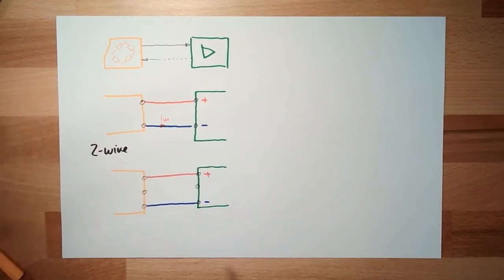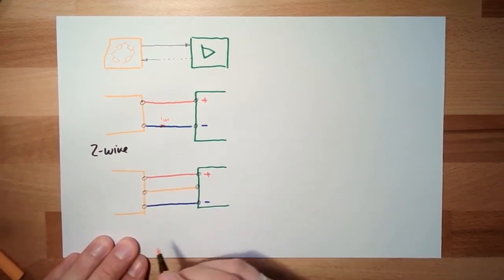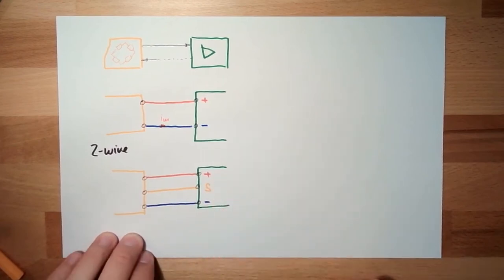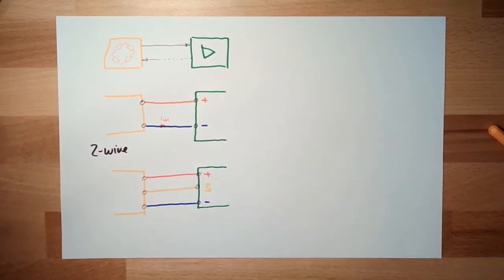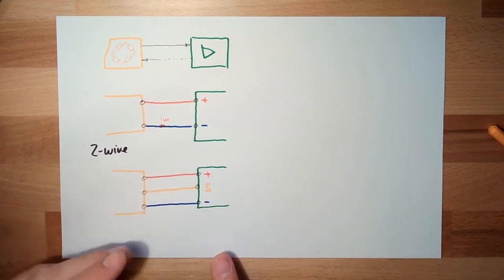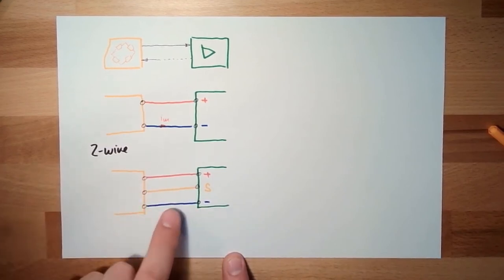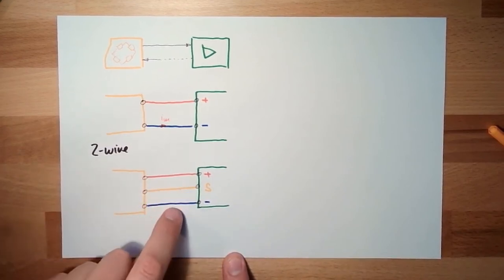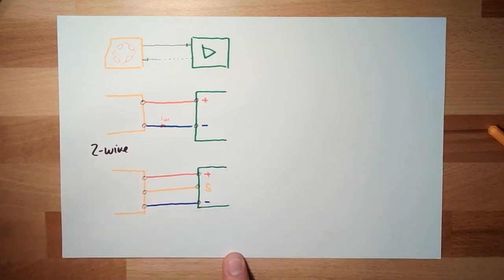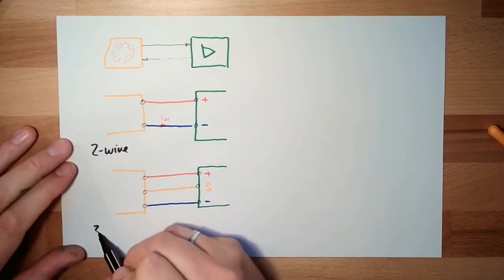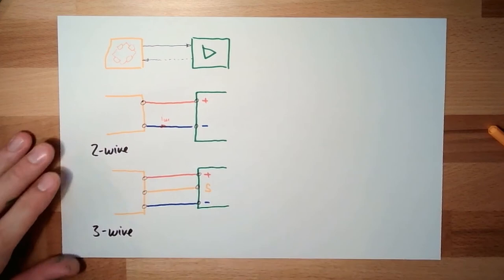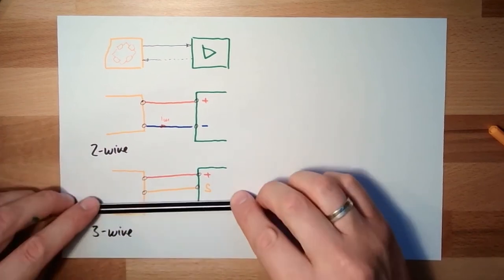And then here, I do have a signal. The sensor is having a third option, a third cable, where it gives back the signal. This now can be voltage. So the signal and the power supply have the same reference, ground. So this can be a voltage signal, or it can be a current signal as well. This thing here is logically called three-wire. Three-wire connection. There's still a common ground.